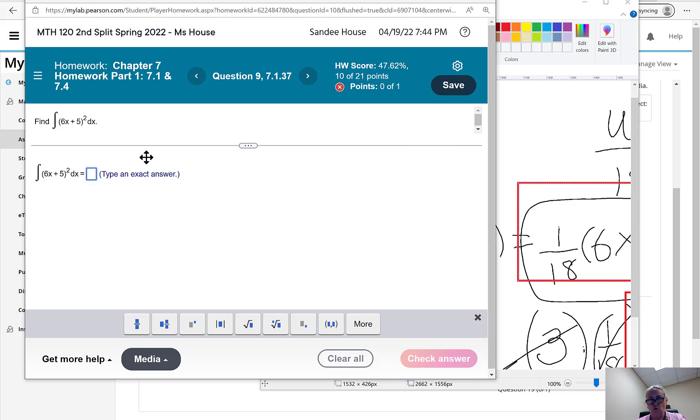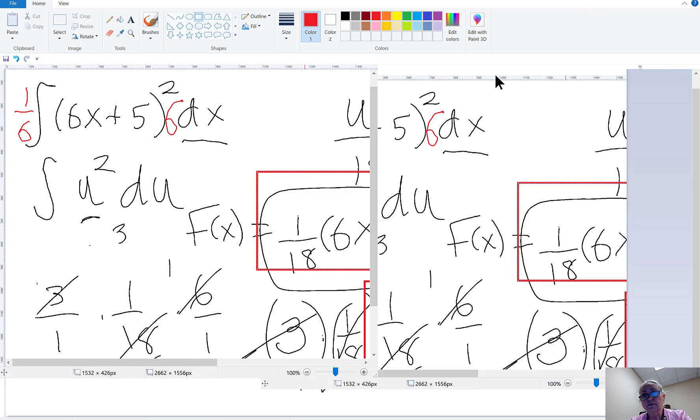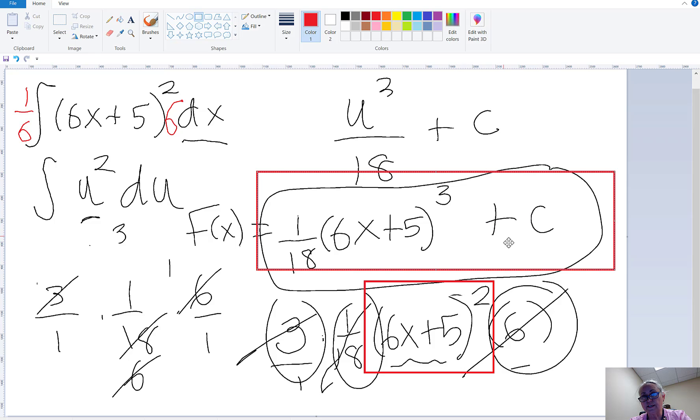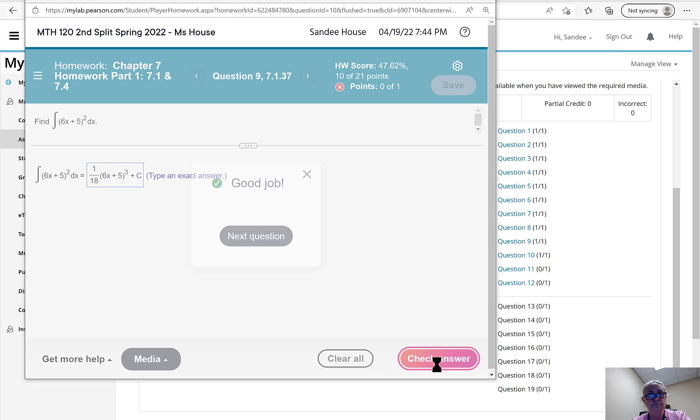So we got 1 over 18, (6x + 5) to the 3rd. And remember, we have to put the plus c, because this function could have had any number added to the end of it, the derivative of which was 0. So let's find out.